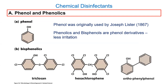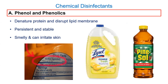Phenolics basically react with and denature proteins, and they also denature membranes and are strong enough to affect nucleic acids. Lysol is a brand with many products — some have phenolics in them. The Lysol wipes, for example, claim to kill 99% of viruses and bacteria, including the one that causes COVID-19, with kill times ranging from 30 seconds to four minutes for different organisms. But finding the active ingredient information on their website is surprisingly difficult.